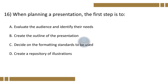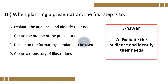Question 16. When planning a presentation, the first step is to: Option A, evaluate the audience and identify their needs; Option B, create the outline of the presentation; Option C, decide on the formatting standards to be used; Option D, create a repository of illustration. The correct option is A.